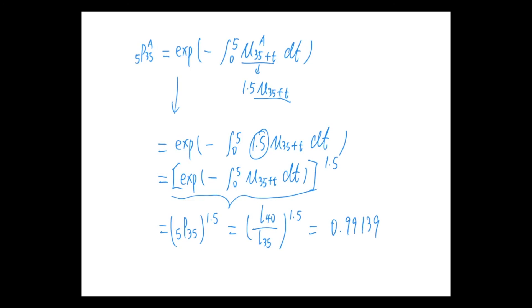In the end, we just take the products of the two probabilities we just calculated, and our final answer is 0.977497.